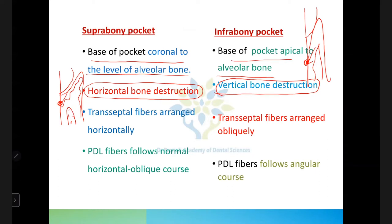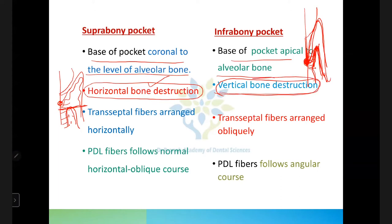In supra-bony pockets there is horizontal bone destruction, while in intra-bony pockets there is vertical bone destruction. Intra-bony pockets are located between the tooth surface and alveolar bone, involving the periodontal attachment and some bone, creating vertical defects. In supra-bony pockets, the bone, periodontal ligament, and alveolar bone all migrate upward equally, preserving their original morphology — hence horizontal bone destruction.